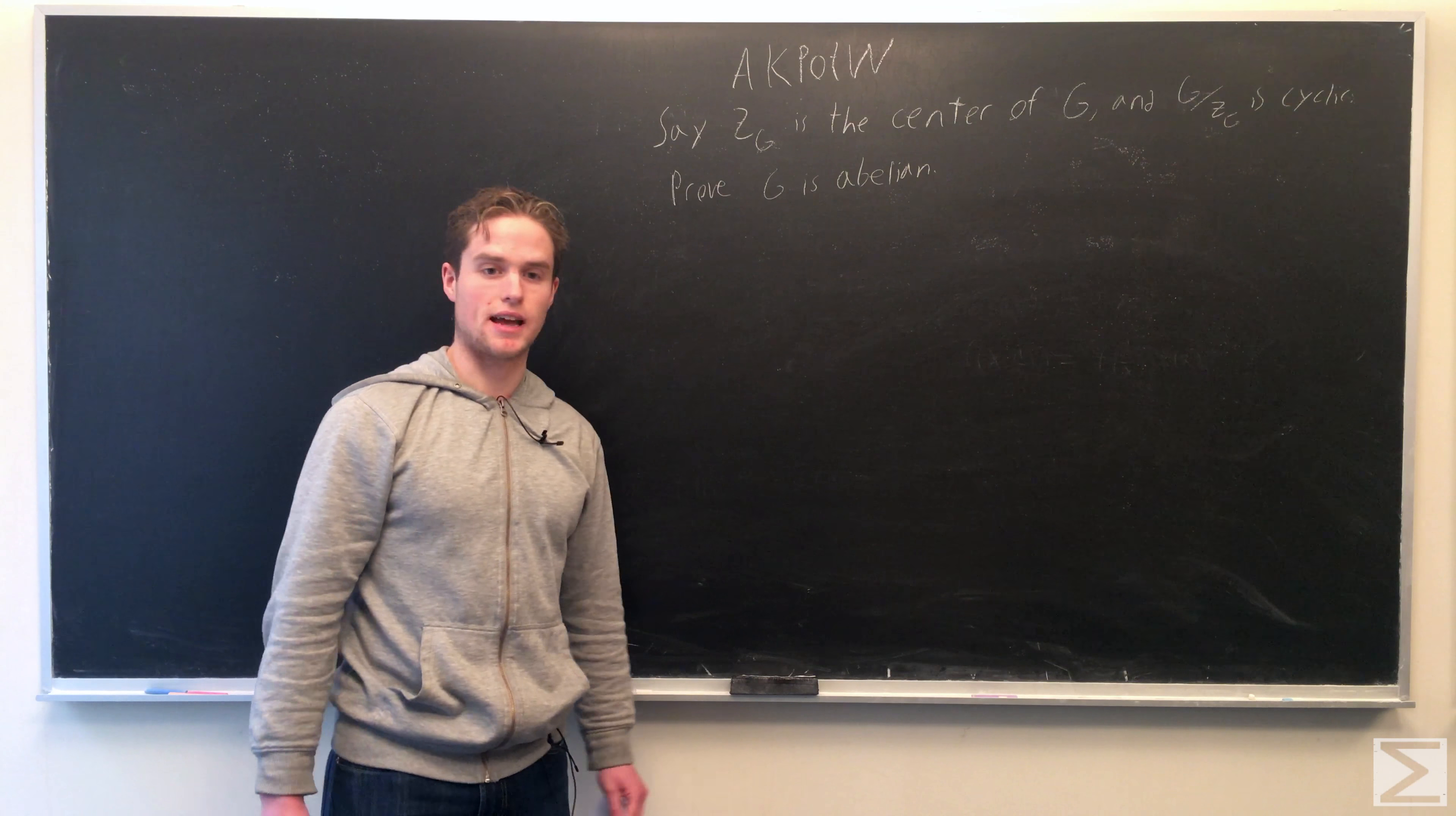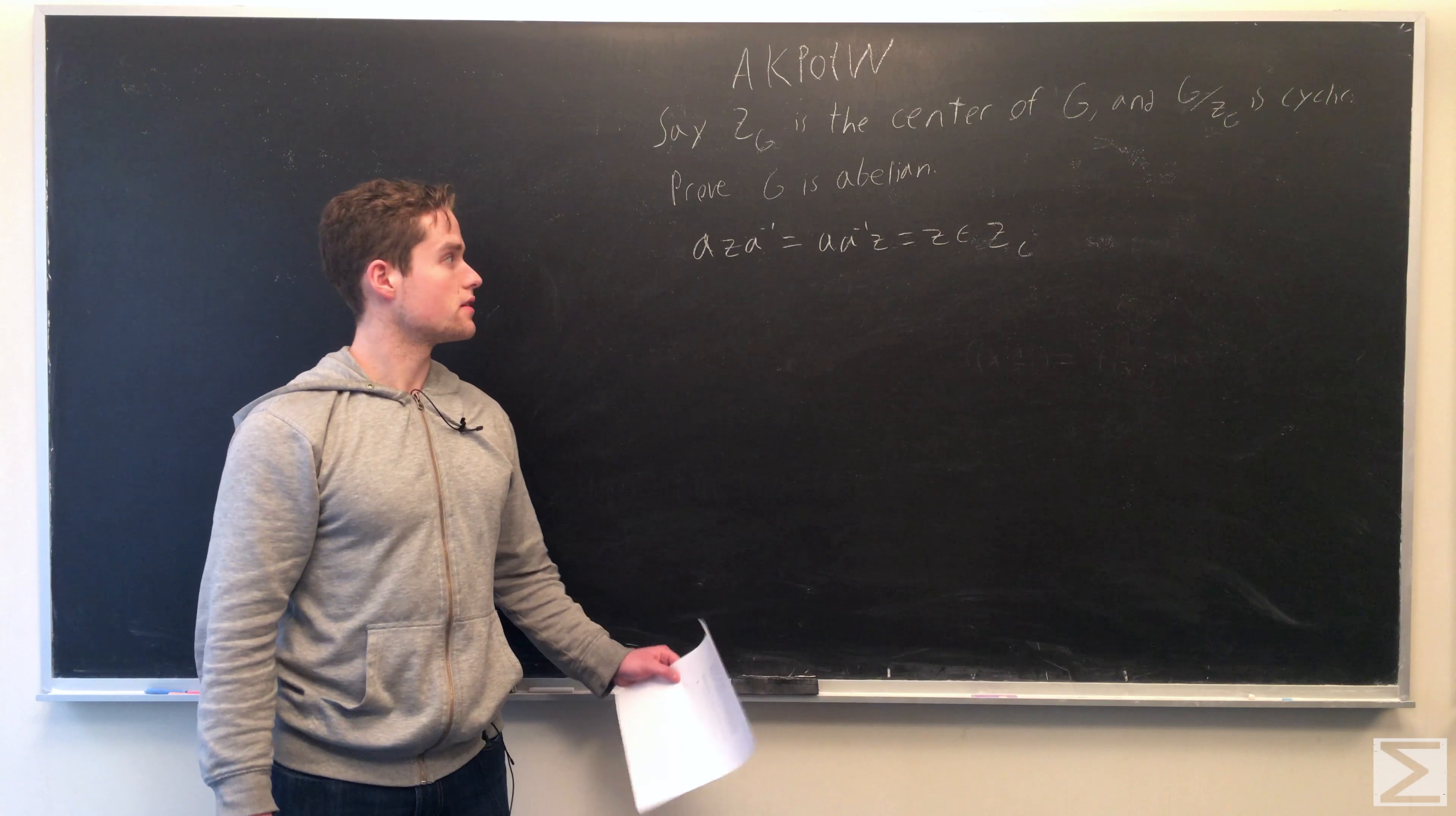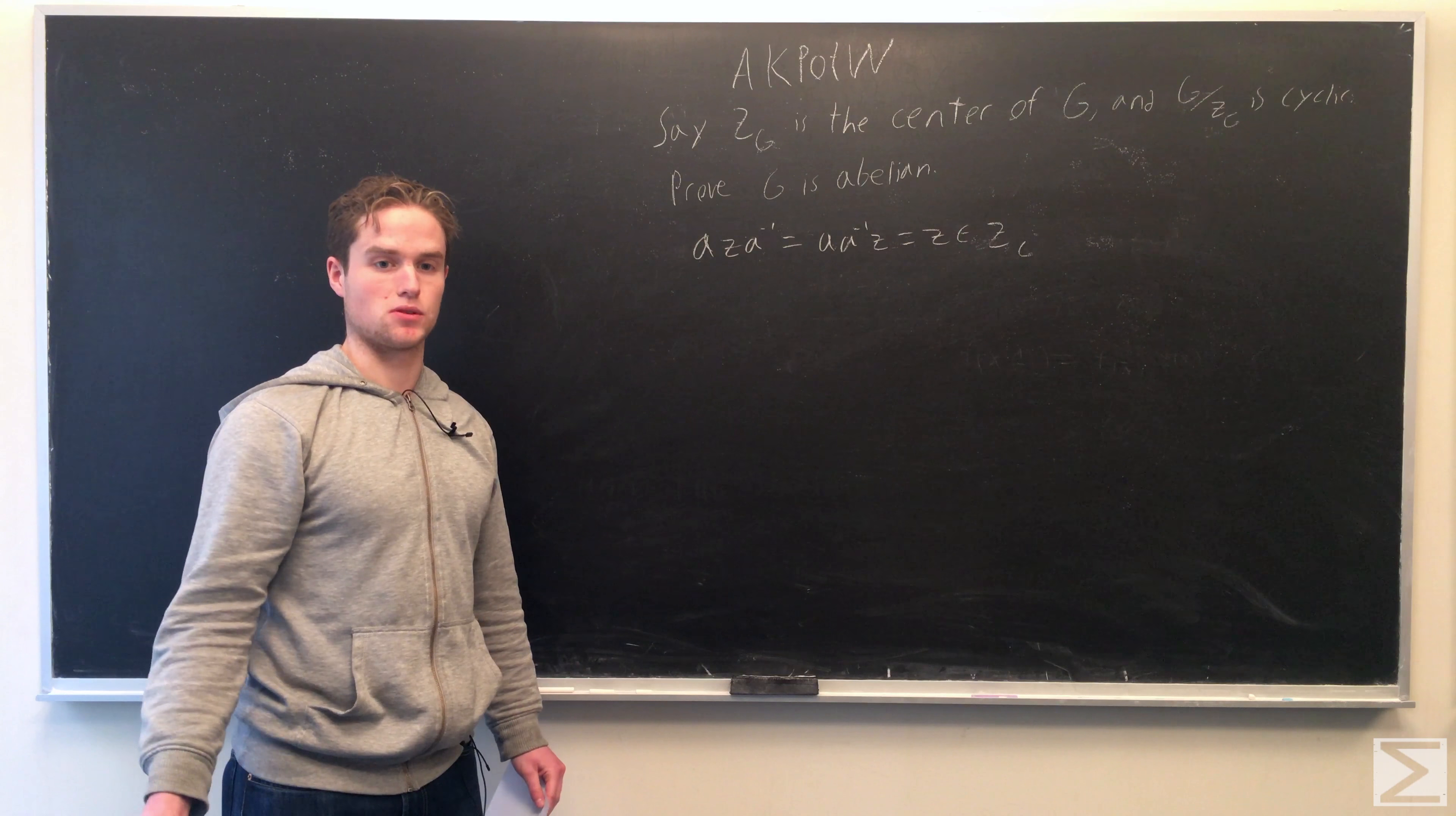So first let's establish that Z(G) is in fact a normal group of G. So if Z is a member of Z(G), then the conjugate of Z, A·Z·A^(-1) (inverse A), is equal to A^(-1)·Z, which equals Z, which is again a member of Z(G). So every conjugate of this group is again in the group, and so the group is normal.